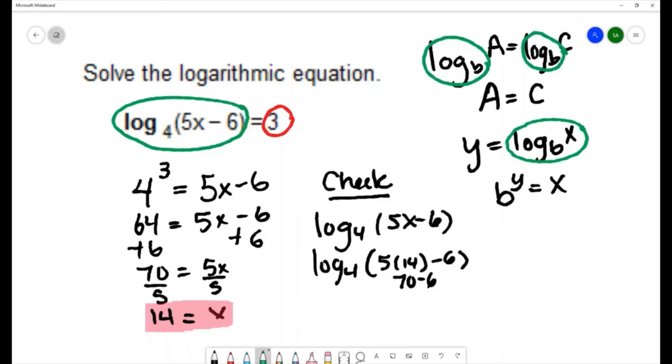We have 5 times 14 minus 6, and that's going to be 70 minus 6. And what we're looking for is it to be a positive value. For the logarithms, the domain is only positive numbers. You can only take the log of a positive number. So because this value came out to be positive, we know that 14 is in the domain of this log expression. So our solution is x equals 14.